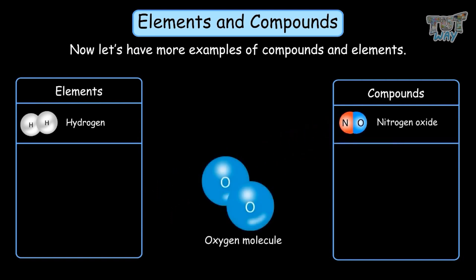Oxygen is an element because it has the same types of atoms. Each molecule of oxygen has the same type of atoms, and the formula is O2.